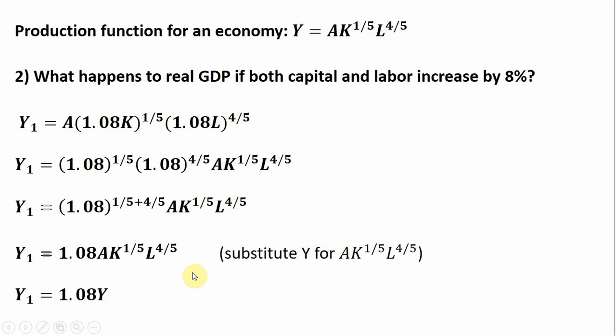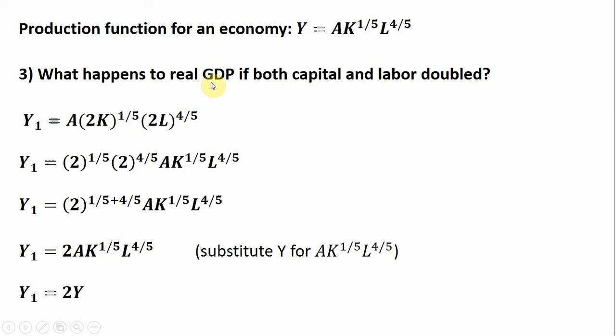Finally, one last example. What happens to real GDP if both capital and labor double? 2 times K and 2 times L represents the doubling of the capital and labor inputs. As before, we factor out 2 to the one-fifth and 2 to the four-fifths. Summing up the exponents, we get 2 raised to the power of 1, which is just 2. Making our substitution, our new output level will be twice the old output level. Doubling the inputs doubles the output. I hope you found this video helpful.